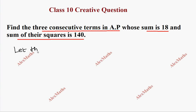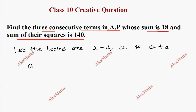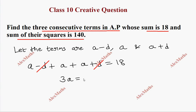Let the three consecutive terms be (a - d), a, and (a + d). The sum is: (a - d) + a + (a + d) = 18. The d terms cancel, giving 3a = 18, so a = 18/3, therefore a = 6.